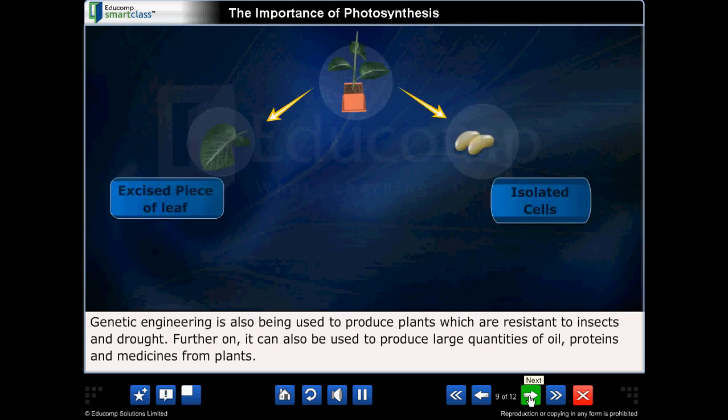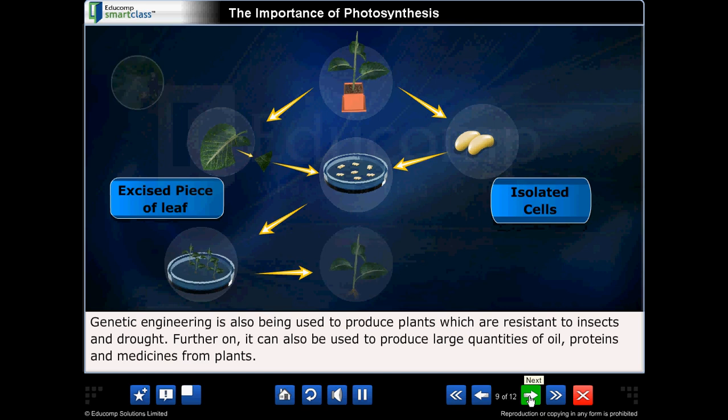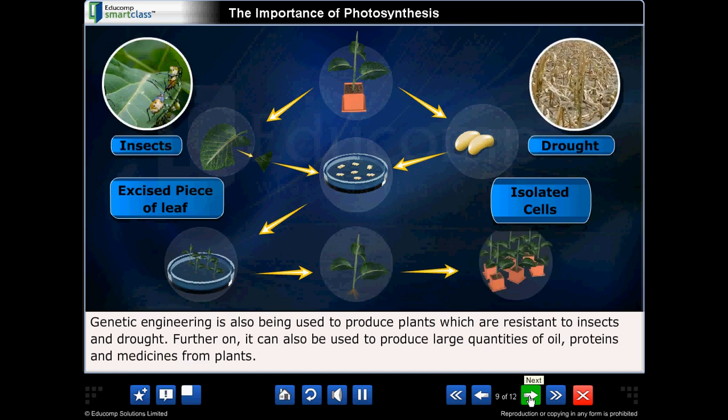Genetic engineering is also being used to produce plants which are resistant to insects and drought. Further on, it can also be used to produce large quantities of oil, proteins and medicines from plants.